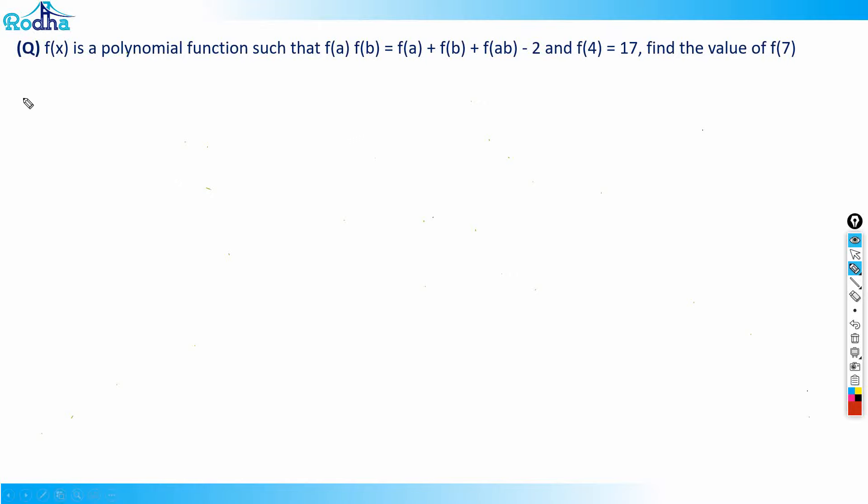Hi guys, let's look at this next question. This is a very good question. It says that f(x) is a polynomial function such that f(a)·f(b) = f(a) + f(b) + f(ab) - 2, and f(4) = 17. Find the value of f(7).